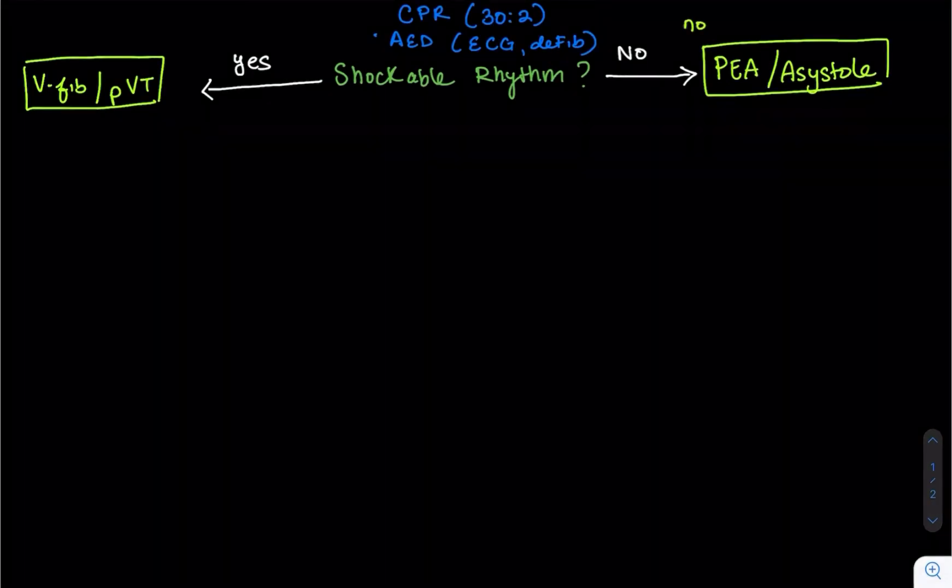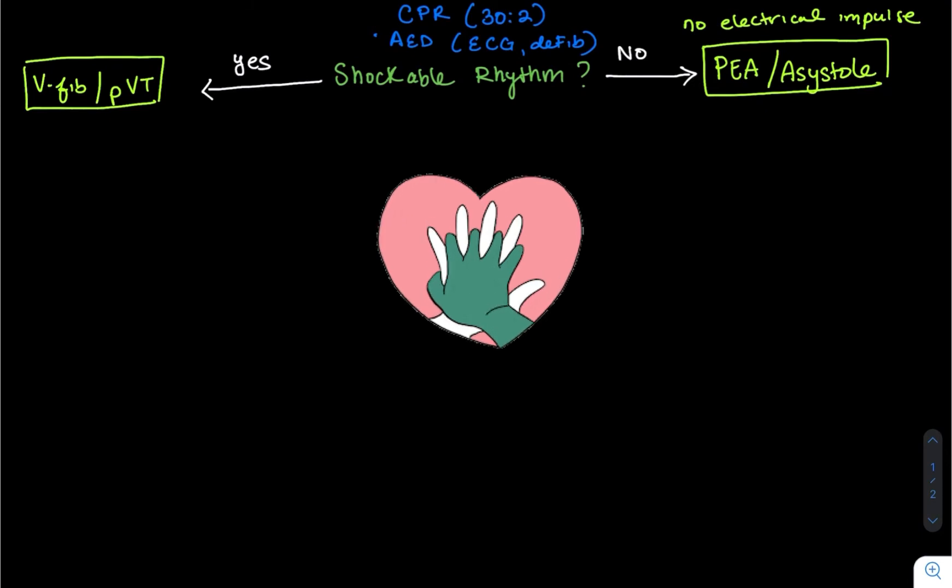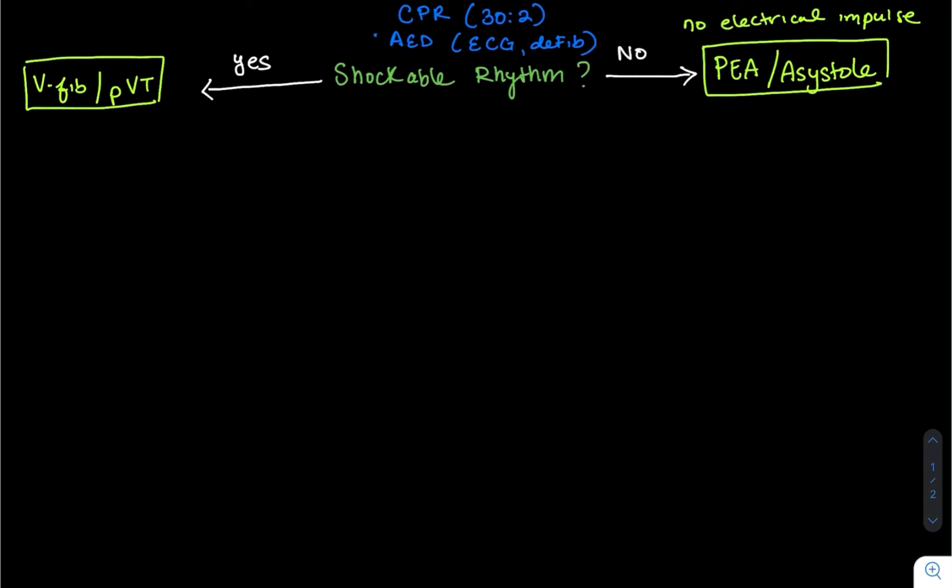These patients do not have any electrical activity and therefore there is no existing electrical component for the AED to deliver that shock. They will, however, depend solely on quality compressions until a shockable rhythm is detected. Another unshockable rhythm are those whose heart rhythm conducts pulses such as normal sinus rhythm, supraventricular tachycardia SVTs, PVCs, AFib, etc.